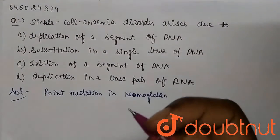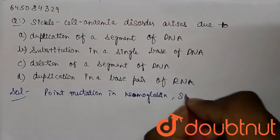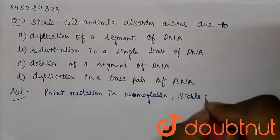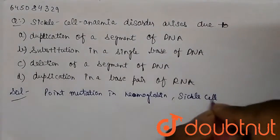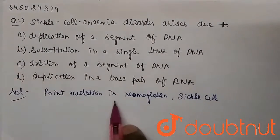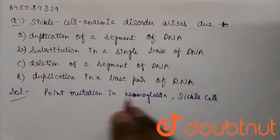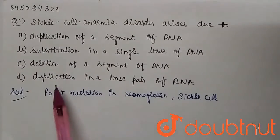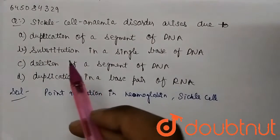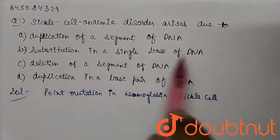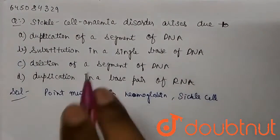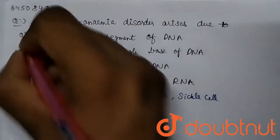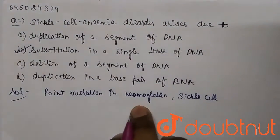The hemoglobin converts to a sickle cell shape. As the name 'point mutation' suggests, point mutations change a single base pair. So studying the options, duplication and deletion can't be the right answer, but substitution in a single base of DNA can be. So the correct option is option B: substitution in a single base of DNA.